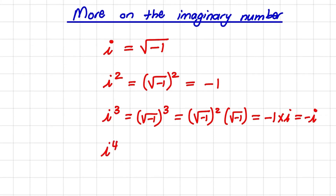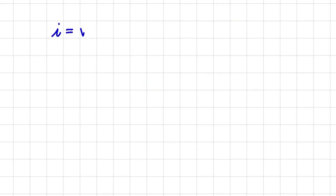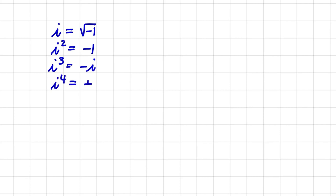If I raise i to the fourth power, I have the square root of negative 1 to the power of 4. That equals the square root of negative 1 squared, times the square root of negative 1 squared, which is negative 1 times negative 1, which equals positive 1. So we see that i equals √(-1), i squared equals negative 1, i cubed equals negative i, and i to the fourth power equals positive 1.